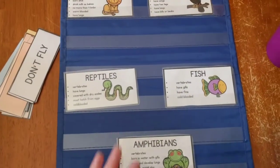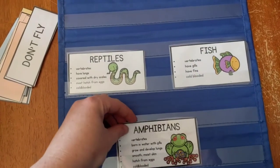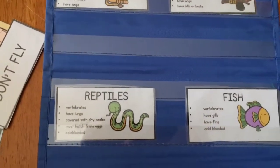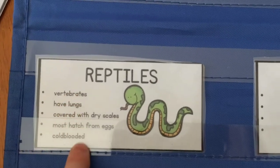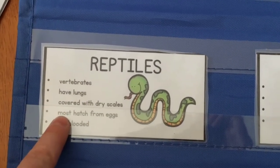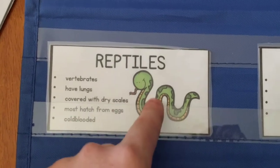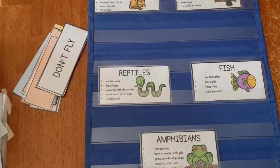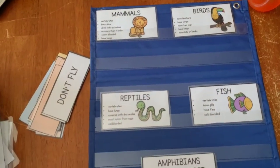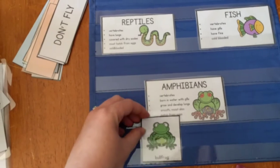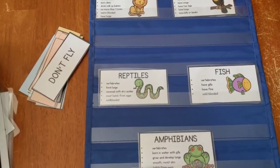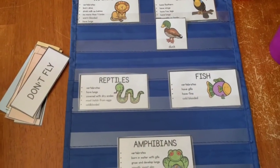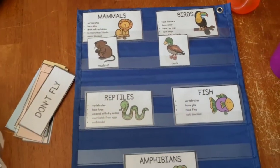Here's another way you can sort them. I give you these cards that have all of the different types of animals: mammals, birds, reptiles, fish, and amphibians. I also give descriptions of what that animal might have - so their vertebrae, they have lungs, they're covered with dry scales, most hatch from eggs, and they're cold-blooded for a reptile, just to help the kids sort them a little bit better. Those would be good for older kids for sorting. Basically they're going to take their cards and sort them under the correct heading - a bullfrog would be an amphibian, a duck would be a bird, and so on.